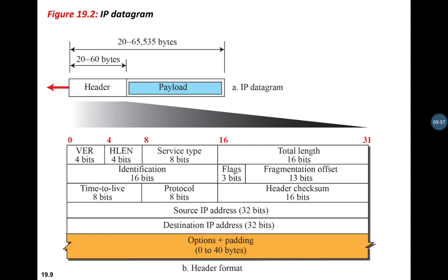The HLEN field is needed so the receiver knows when the header stops and the payload starts — it must not mistake header for data. The header is like the address written on an envelope, while the payload is the letter inside. Multiplying the 4-bit HLEN value by 4 gives the total header length in bytes.